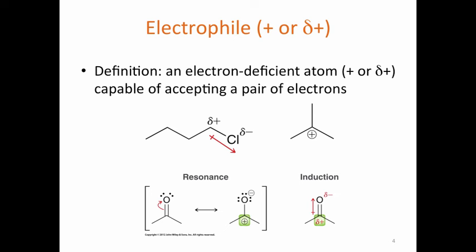Electrophiles, which have a positive or delta-positive charge, are electron-deficient atoms capable of accepting a pair of electrons. So a nucleophile will react with an electrophile to form a new bond. Some examples are shown below. For example, electronegative chlorine makes the adjacent carbon electropositive — it's that carbon that is electrophilic. The carbon in a carbocation is also electrophilic; notice it has a full positive charge. Pi bonds can also act as electrophiles. The resonance structure shows us the positive and negative charge; the hybrid tells us there's a delta-positive on the bottom carbon and a delta-minus on the oxygen, created by an inductive effect.